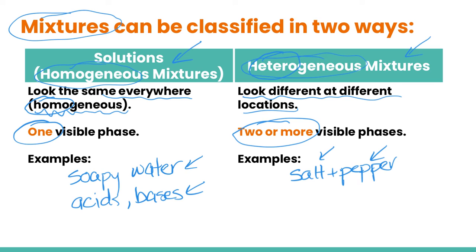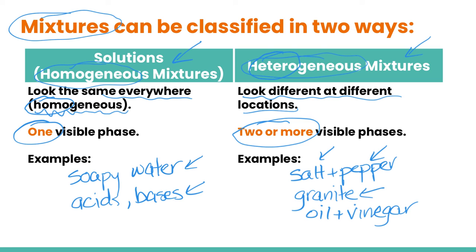Some other great examples of heterogeneous mixtures include granite — if you have a granite countertop, you can see all the different flecks of different minerals and rocks within it. Oil and vinegar is another good example because when you put those two together, they don't mix, creating two or more visible phases. And finally, everyone's favorite example of a heterogeneous mixture is pizza — you've got all the different toppings that don't mix together to make one visible phase.